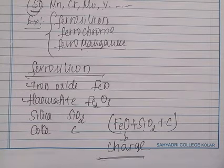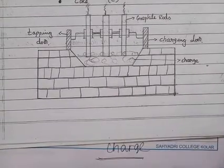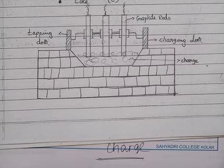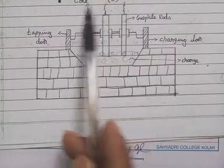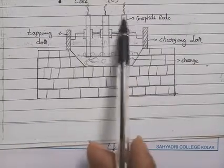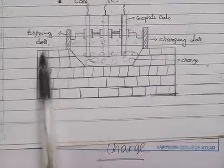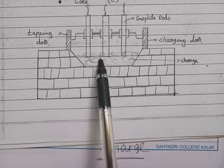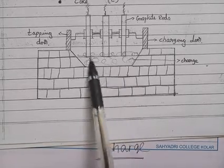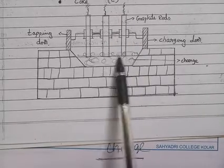The charge is introduced into the electric arc furnace. An electric arc is struck between the graphite electrodes — there are three graphite electrodes. The charge is introduced into the furnace and the electric arc is struck between the electrodes.